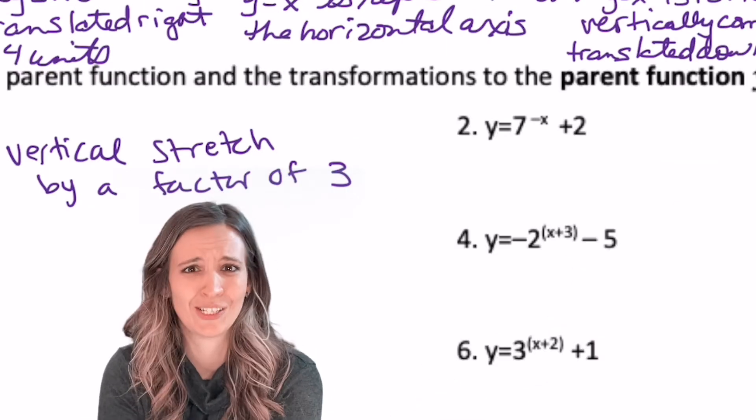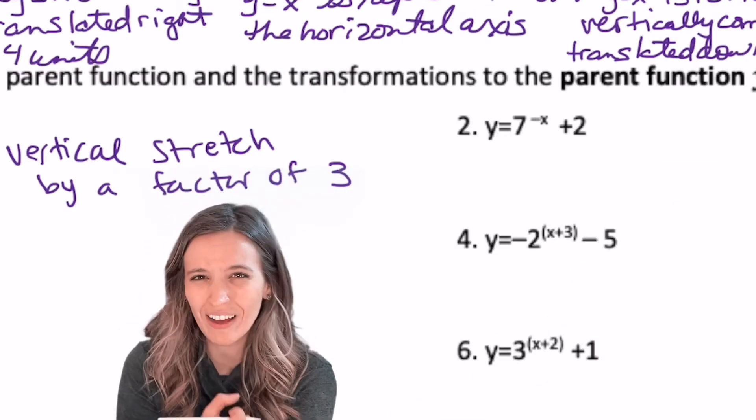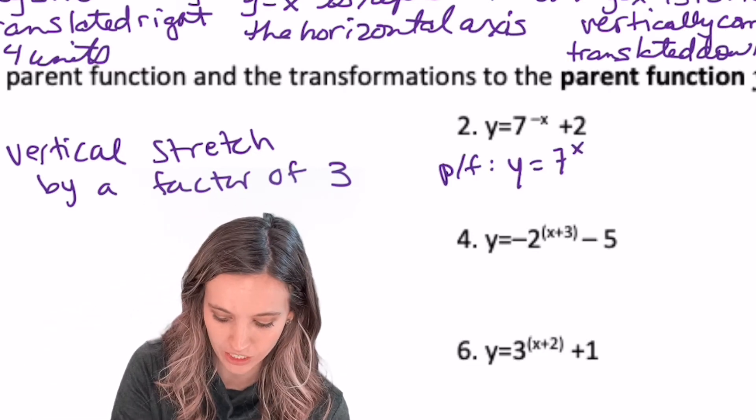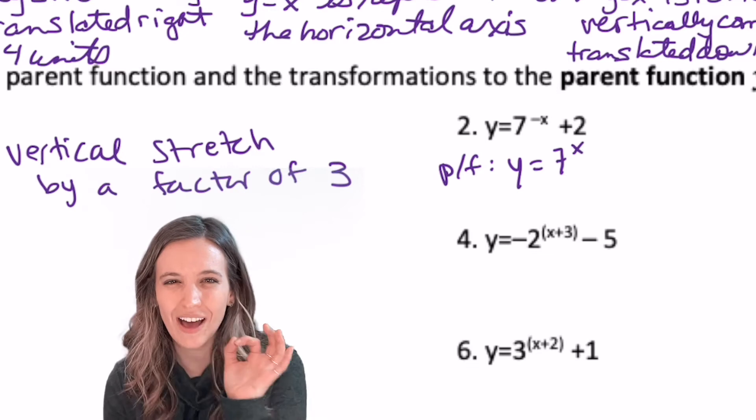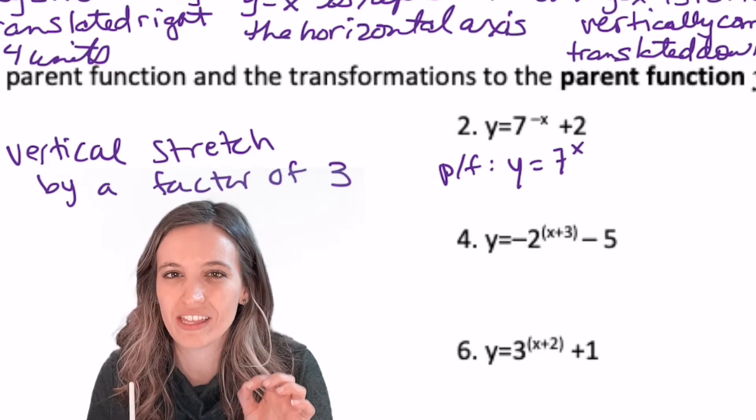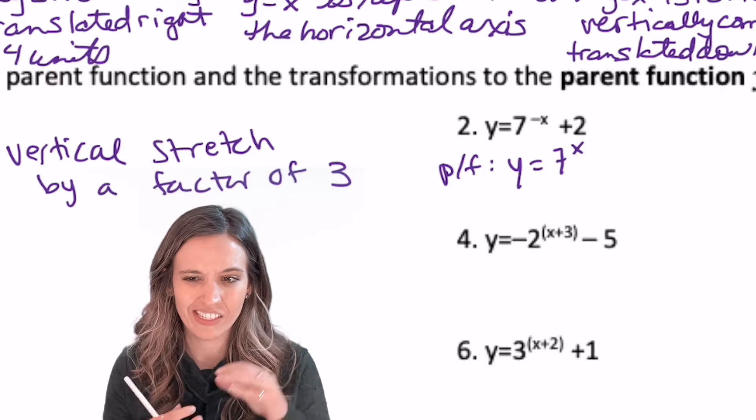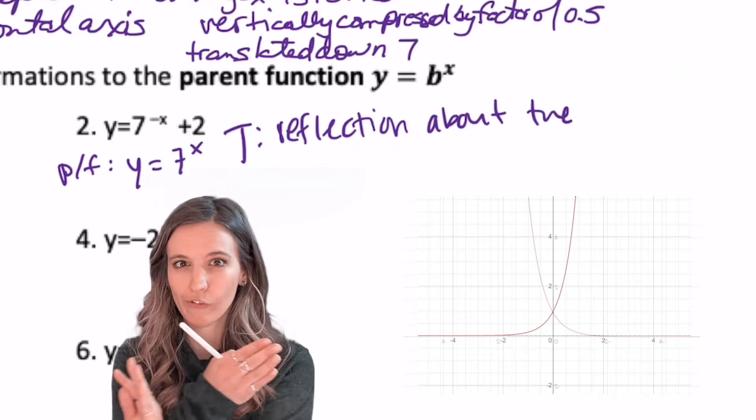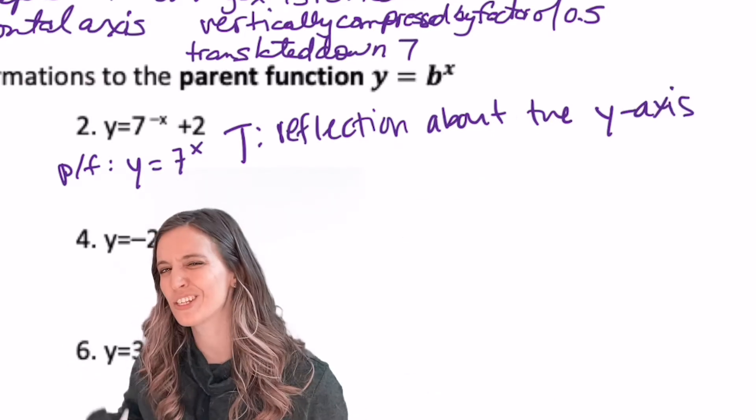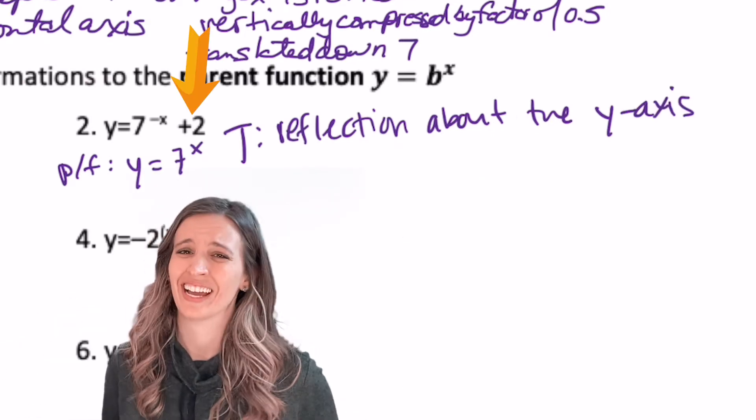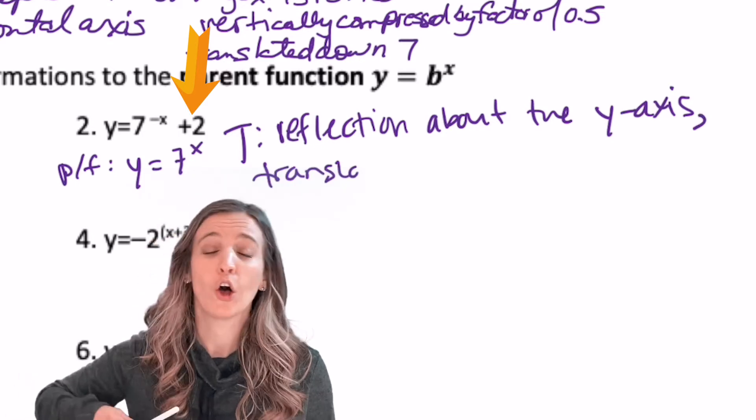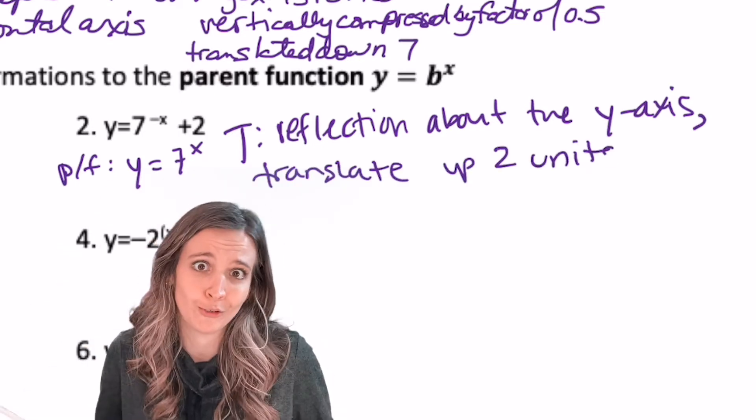Looking at the next one. Well, we do have a base of 7, so 7 to the x is going to be my parent function. Now let's take a closer look. We have a negative inside with the x, and then we have plus 2. That negative's inside, so inside we think vertical reflection. What's that plus 2 outside the 7 to the negative x going to do? It's outside. Outside, same. We know it's a translation up 2 units.